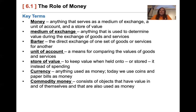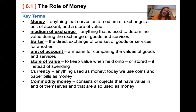Currency is anything that's used as money — it could have been shells, teeth, or corn. We use coins and paper bills as money. There are two types of money: commodity money and representative money.